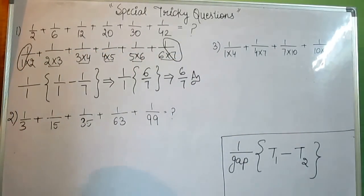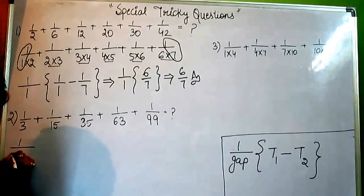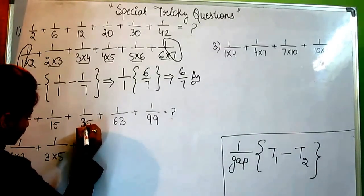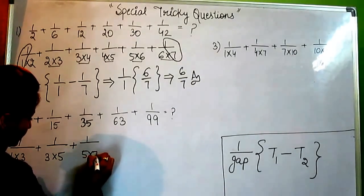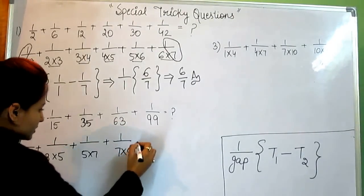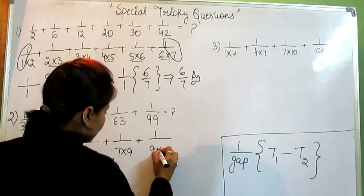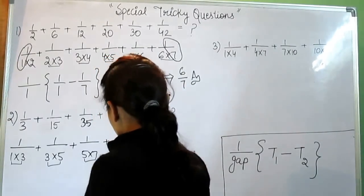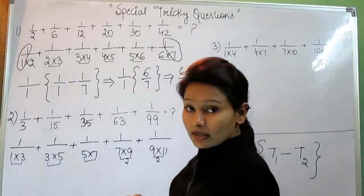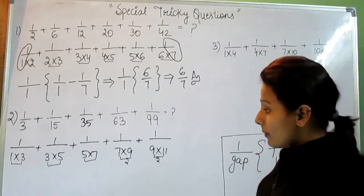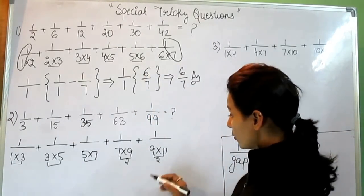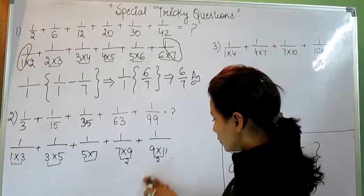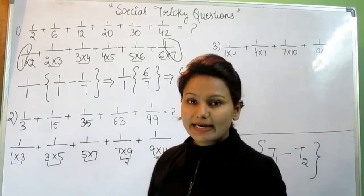Now, take the second question. We can write this in this way. Plus, now, this in this way. And this is 35, 35 can be written in this way. 63 in this way, and 99 in this way. Now, see the gap. The gap is same. What is the gap? The gap is 2. The difference between these two numbers is 2. But the sequence should be in ascending order. You cannot write 9 into 11, then your answer will become wrong. Always use ascending order.